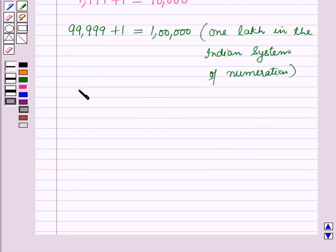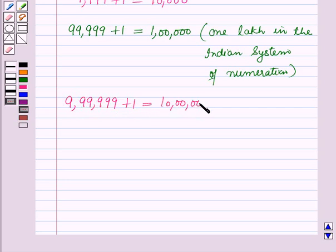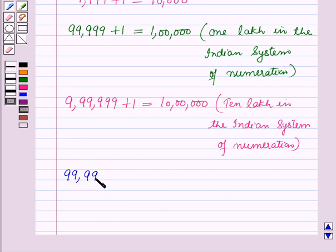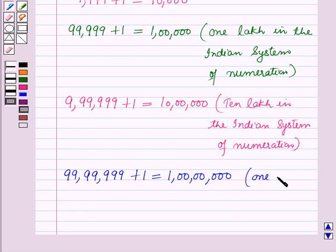The greatest six-digit number 9,99,999 plus 1 equals the smallest seven-digit number, which is 10,00,000 in the Indian system of numeration. The greatest seven-digit number 99,99,999 plus 1 equals the smallest eight-digit number, which is 1 crore in the Indian system of numeration.